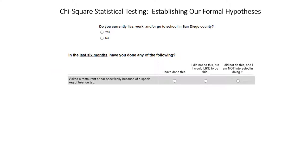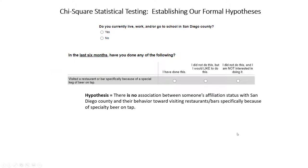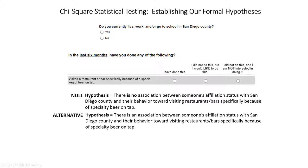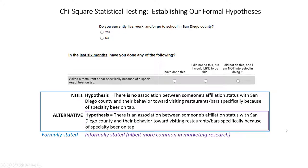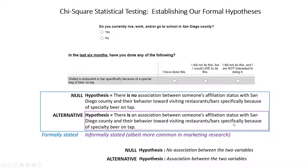Let's establish our formal hypotheses. The null hypothesis is that there is no association between someone's affiliation status with San Diego County and their behavior toward visiting restaurants or bars specifically because of a specialty beer on tap. The alternative hypothesis is therefore that there is an association. Typically in marketing research projects, people state the alternative hypothesis as the hypothesis. Put concisely: the null is no association between the two variables, and the alternative is that there is an association.